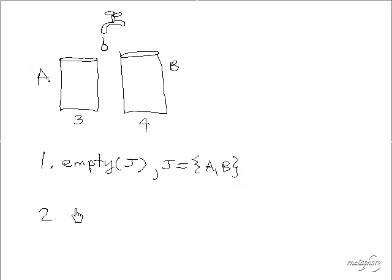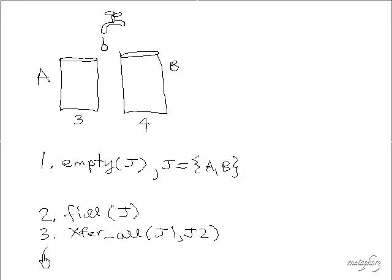So what we can do is we can create a production system to define the dynamics of this water jug situation. And one way of doing that is to go ahead and create a set of rules or productions. We'll say the first rule is empty capital J. And that just means empty a jug. And of course, J can then be either equal to A or B. And the other rules are going to be fill J. And then another rule can be transfer all. This will be transfer from some jug J1 to some jug J2 where J1 and J2 can be A or B.